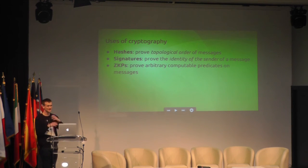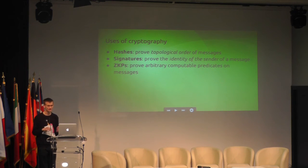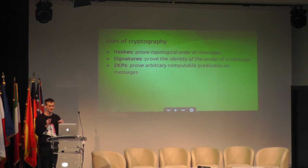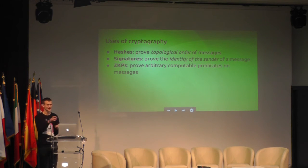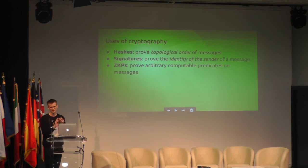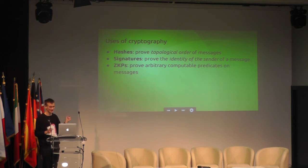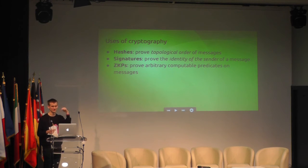Let's think about the cryptographic toolbox we have more broadly. The first thing we have is hashes. The purpose of hashes is to prove the topological order of messages — topological order being a kind of partial ordering. If A includes the hash of B, then A came after B. Topological order is partial because you could have two objects where neither contains the hash of the other, so you can't tell which came first. If A contains the hash of B and B contains the hash of C, then A is after B and B is after C, and by transitivity A is after C. Because hash algorithms prevent cyclic graphs, the structure is acyclic and you have an order.